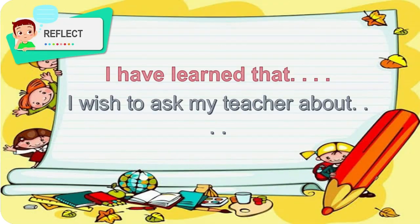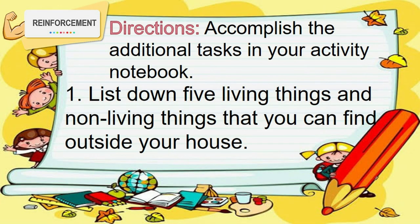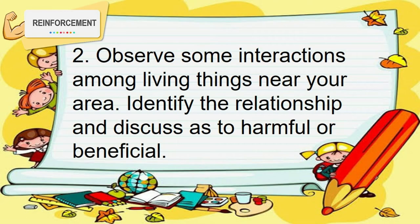Congratulations! You have finished all the activities. To strengthen what you have learned in this video, accomplish additional tasks in your activity notebook to be collected by your science teacher. Number 1: List down 5 living things and non-living things that you can find outside your house. Number 2: Observe some interactions among living things near your area. Identify the relationship and discuss whether it is harmful or beneficial.